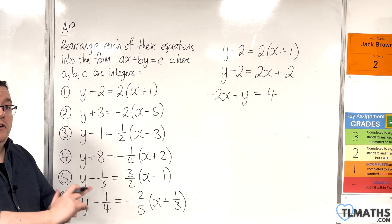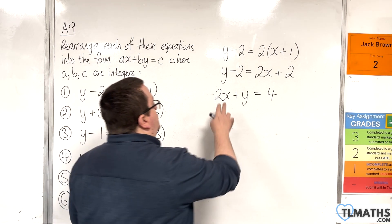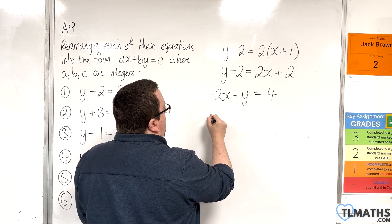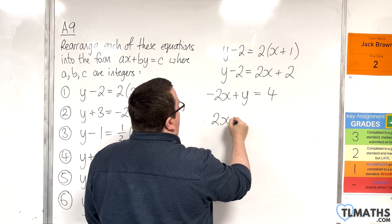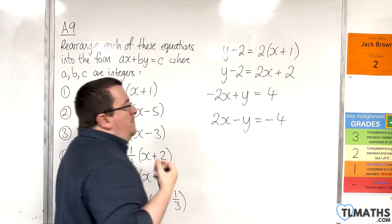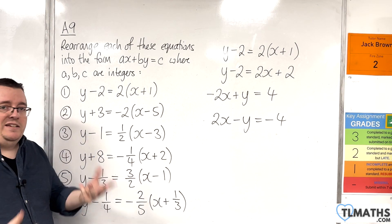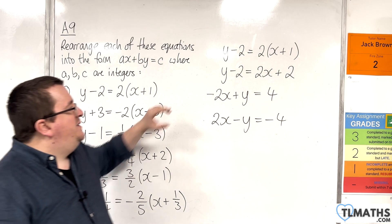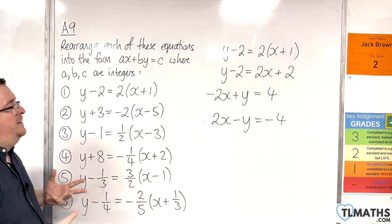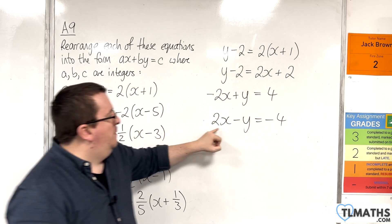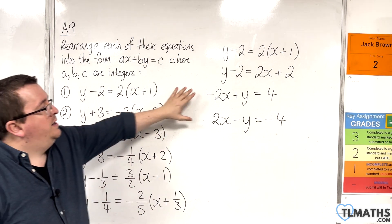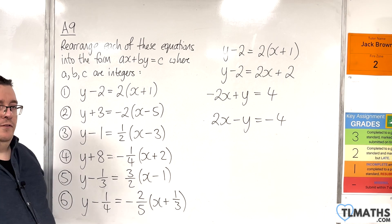If you don't like the minus sign being in front of the 2x, you can multiply through by minus 1, which gives 2x take away y equals minus 4. But that would be for aesthetic reasons — there's nothing different between these two formats. They're both the correct answer, since 2, minus 1, and minus 4 are all integers.